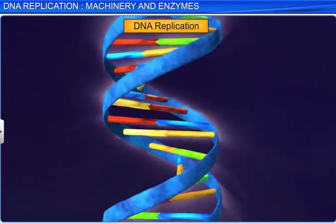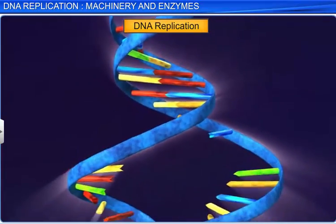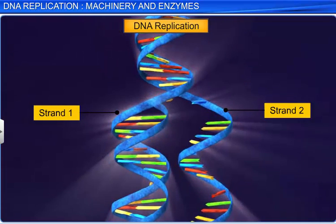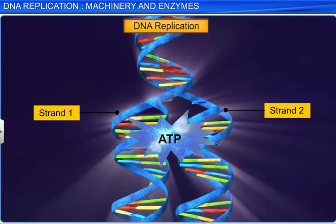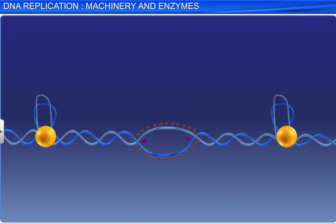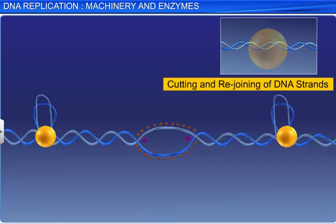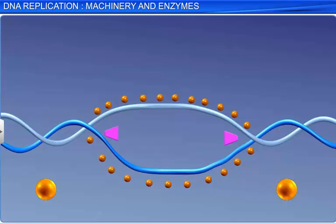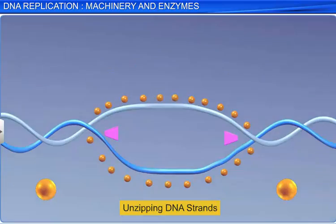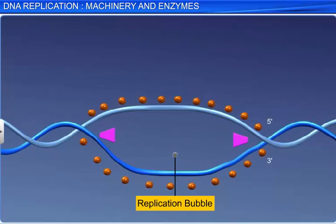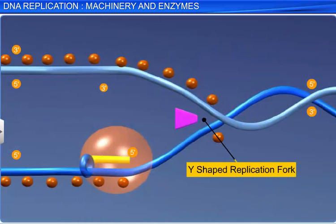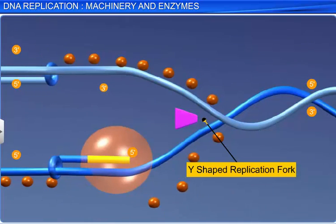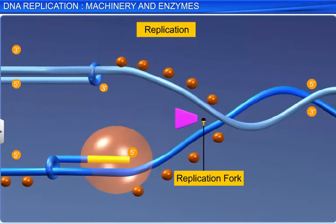Due to the high energy requirement, two DNA strands do not always separate completely, especially in the case of long DNA molecules. However, to facilitate the separation of a DNA helix, the enzyme topoisomerase cuts and rejoins one strand of DNA. This then unzips the double stranded DNA. As a result, replication bubbles are formed that extend as a Y-shaped replication fork, which is actually a small opening in the DNA helix where replication occurs.